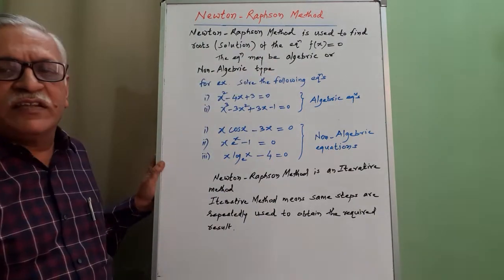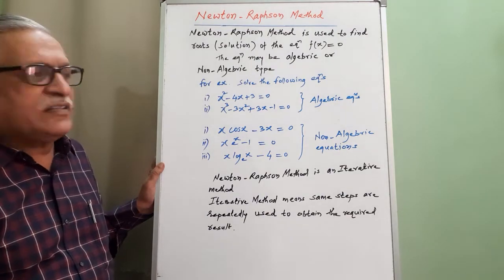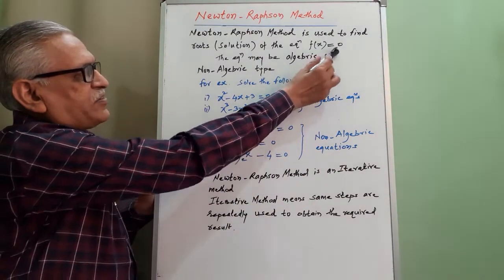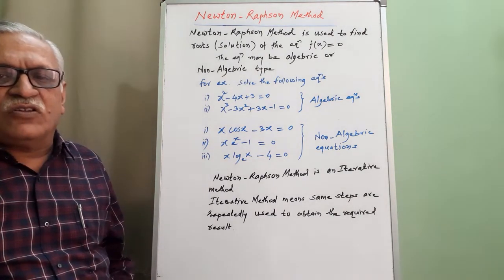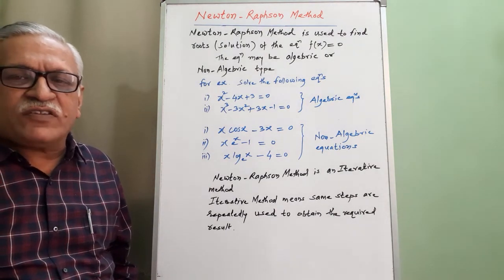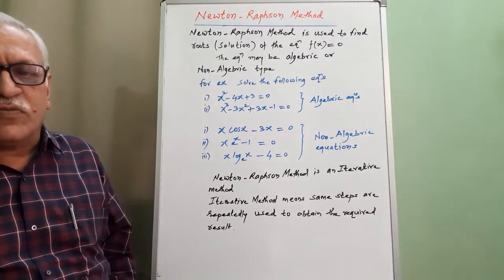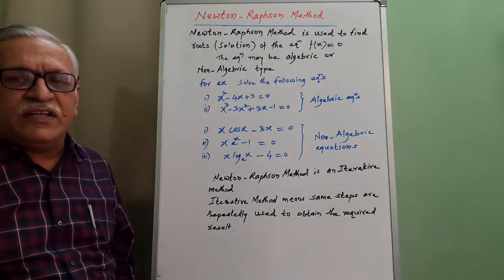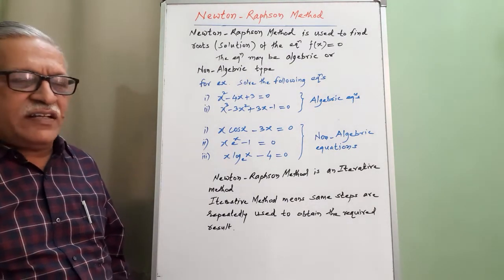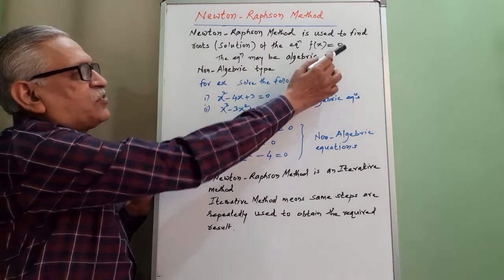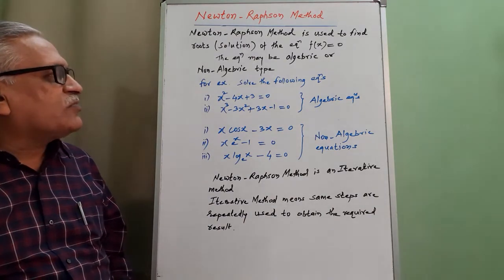The Newton-Raphson method is used to find roots or solutions of the equation f(x) = 0. Root, or solution, means the value of x which satisfies the given equation. Graphically, it means where the graph cuts the x-axis — where the function value is 0. That point is called the root or solution of the equation.